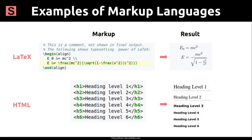Not all markup languages are going to look like this — each one will be different. For example, on the left you can see some HTML and LaTeX markup, and they look very different. On the right hand side of the screen, we see the styled and displayed versions of that markup. Those styles depend on the web browser or computer program that's reading the markup. In fact, once our text has been marked up with a markup language, we can style it to look however we want with something called stylesheet languages. And that's our next lesson — let's learn how to make our data look nice now that we've given it structure with a markup language.